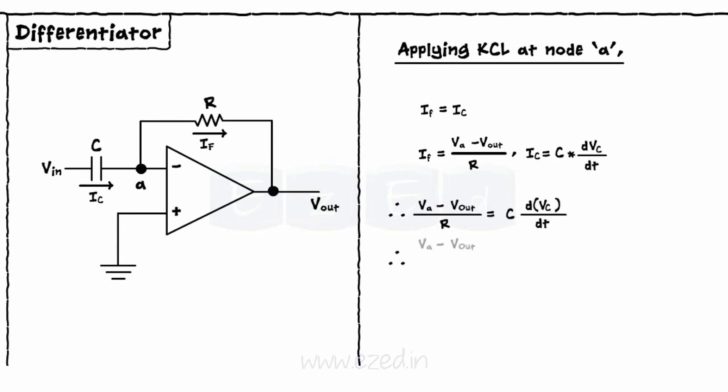Hence, VA minus Vout upon R equals C into d by dT of Vin minus VA. But VA equals 0. Thus, minus Vout upon R equals C into dVin by dT.